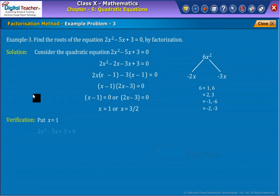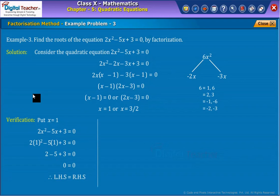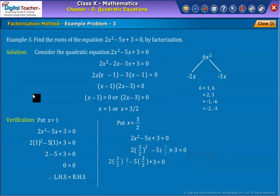For verification, put x equal to 1 in the given equation. By further solving, we get both LHS and RHS equal. Similarly, put x equal to 3/2. We again get both LHS and RHS equal.